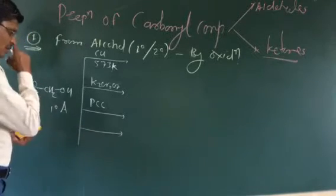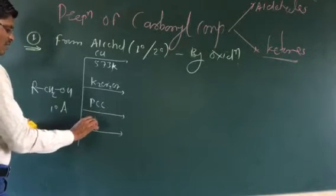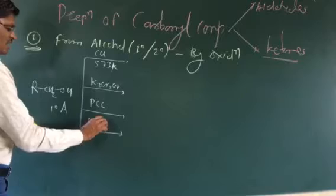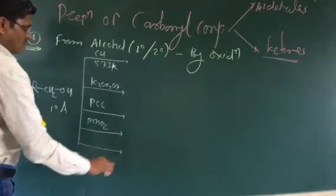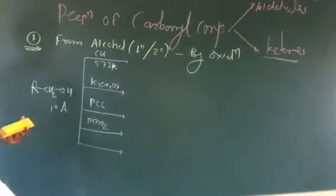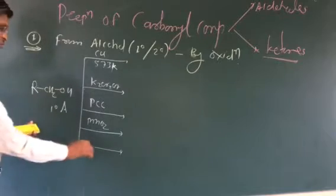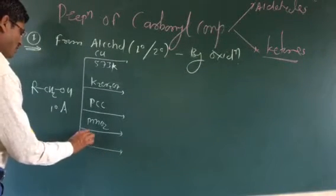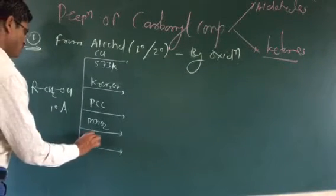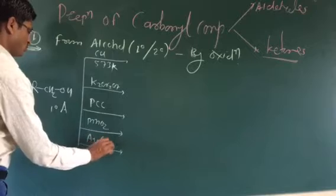Other oxidizing agents include MnO2 (manganese dioxide), sodium dichromate, Jones reagent, and Hg2CO3 (silver carbonate on celite). These are various types of oxidizing agents used in these reactions.